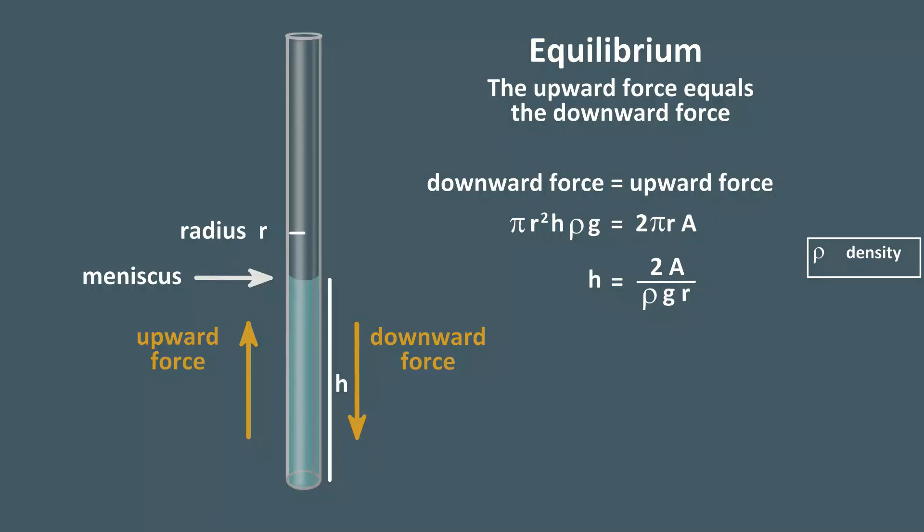We've derived an equation that you won't find in a textbook, but it does resemble a well-established equation known as Jurin's Law. Jurin's Law states that the height of a liquid in a capillary tube is inversely proportional to the radius of the tube. Here,